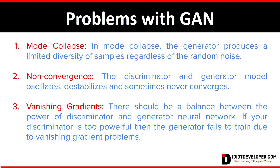Now let's see a few problems with GAN. The first problem is mode collapse. GANs usually produce a wide range of outputs for every random noise given to the generator. In mode collapse, the generator produces a limited diversity of samples regardless of the random noise — in some cases producing the same output for every random noise. This is one of the most common problems.